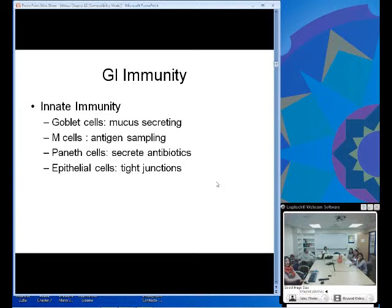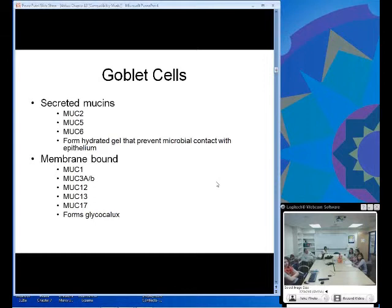In the GI tract, the innate immune system is made up of mucosa-secreting goblet cells, M cells which are important in antigen sampling, Paneth cells which secrete antibiotics, and the epithelial cells with tight junctions which keep out antigens that we don't want to be absorbed.